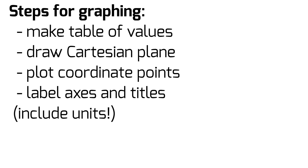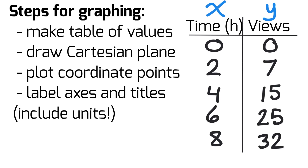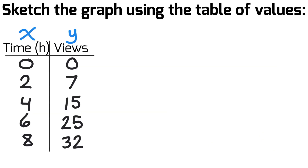Let's look at an example table of values showing time and views of a YouTube channel. Time is the independent variable on the x-axis and views is the dependent variable on the y-axis. You can see our coordinate points: (0, 0), (2, 7), (4, 15), and so on. We'll use that table of values to create a graph using those steps.